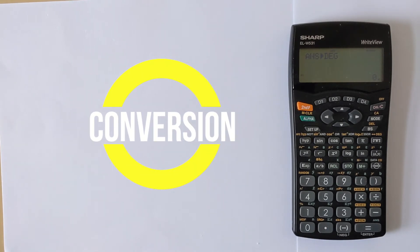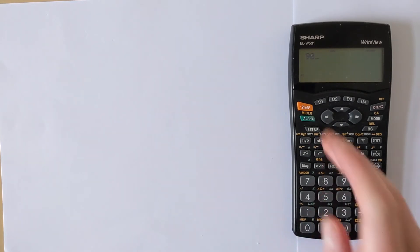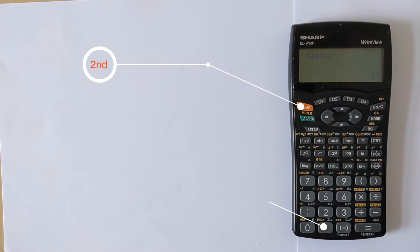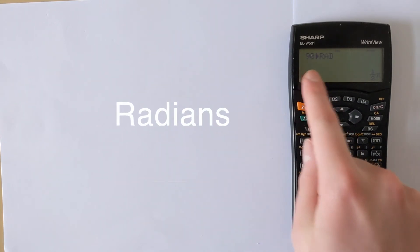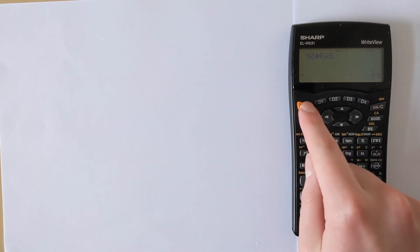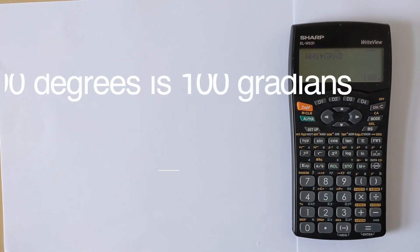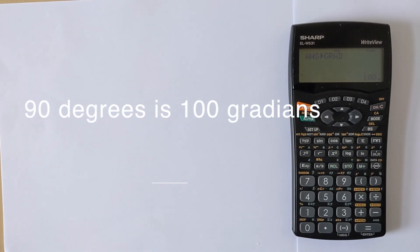If you want to do a conversion, for example, you could have 90 and then if you press second function and then dot, that converts it to radians and you can see that 90 is pi over 2 radians. If you press shift and then dot again, you can see that 90 degrees is 100 gradians and that does the conversion as well.